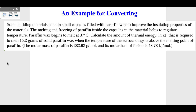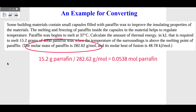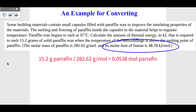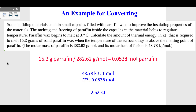Here's an example of a straight conversion. We have paraffin wax and we're calculating the thermal energy in kilojoules required to melt 15.2 grams of paraffin. We see grams, so we divide by the molar mass: 15.2 g ÷ 282.62 g/mol = 0.0538 moles of paraffin. Now we do a molar ratio using the molar heat of fusion, which is 48.78 kJ per mole. Setting up the proportion: 48.78 kJ/mol × 0.0538 mol = 2.62 kilojoules of heat needed to melt the wax.